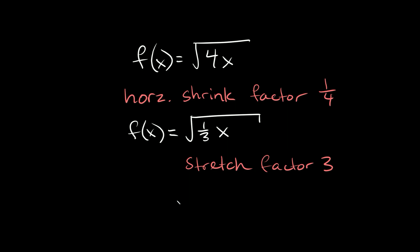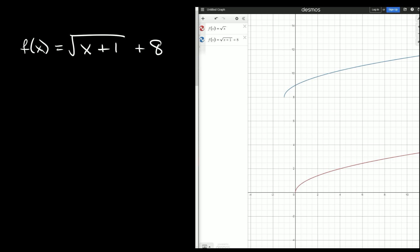Now let's go over a few examples combining all of this together, and I'll show you how to graph them. So f of x is equal to the square root of x plus one plus eight. We have a number on the inside and on the outside. A number inside moves it left or right — positive one, take the opposite sign, so move one space to the left. The number outside moves it up or down — positive eight means eight spaces up. The red graph is the parent function, and the blue one is the transformed one: one to the left and up eight.